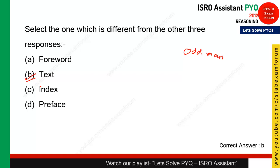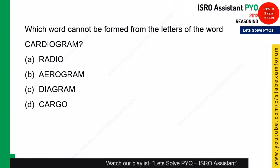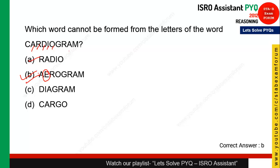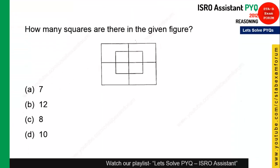Which word cannot be formed from the letters of 'cardiogram'? You need to check each option. 'Radio' — R A D I O — can be formed. 'Aerogram' cannot be formed because the letter E is not present in 'cardiogram'. So option B is the right answer.